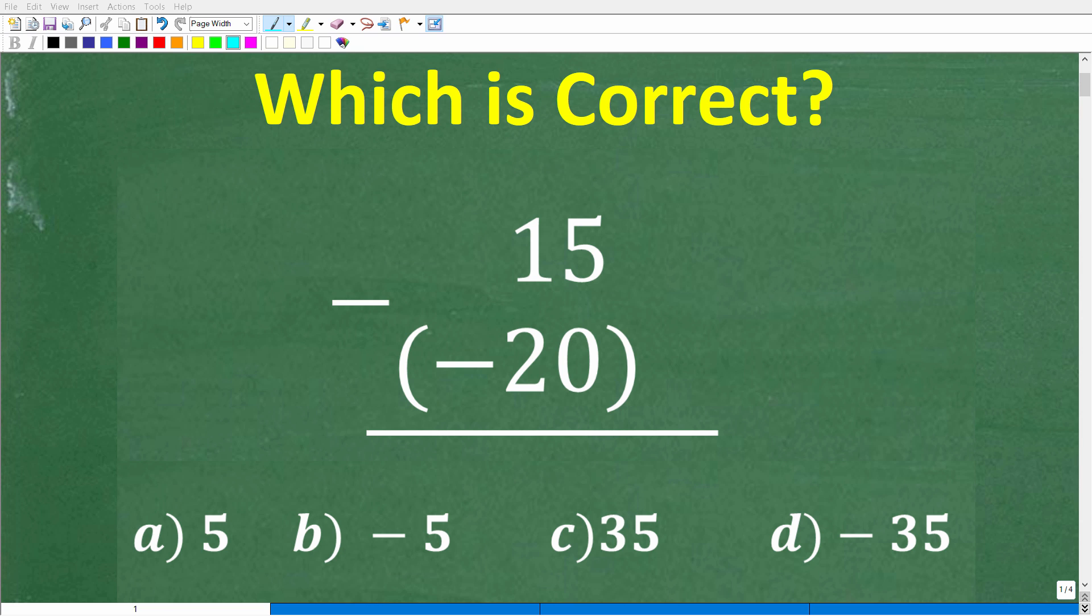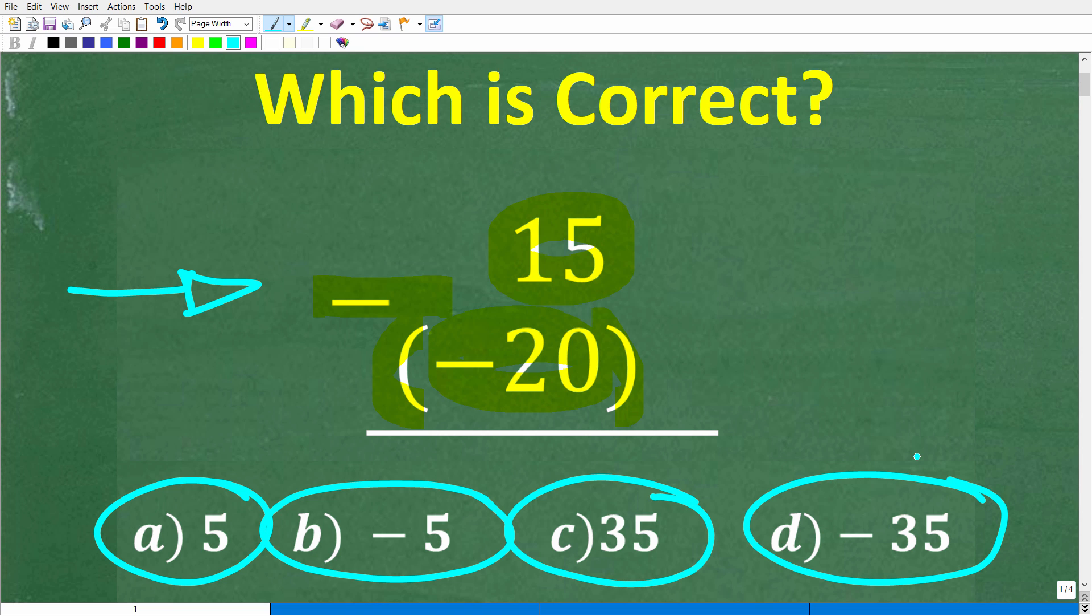If you know how to work with positive and negative numbers, this will be a very easy problem to solve without using a calculator. Let's take a look at our problem. We have 15 minus a negative 20 in parentheses, but we do have a multiple choice question here. So A is 5, B is negative 5, C is 35, and D is negative 35.